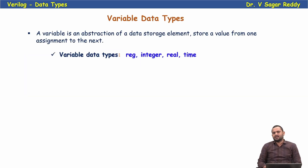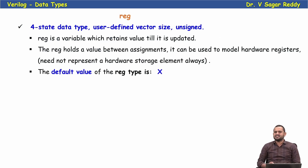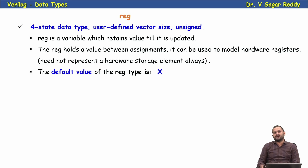Another data type is the variable type. A variable is an abstraction of a data storage element that stores a value from one assignment to the next — meaning it holds the previous value until a new one is assigned. We have different variable data types: reg, integer, real, and time. The reg type is a four-state data type with user-defined vector size and is unsigned. It can hold values 0, 1, x, and z, and retains its value between two assignments. It can be used to model hardware registers, but don't assume it always represents a hardware latch or flip-flop. The default value of reg is x.